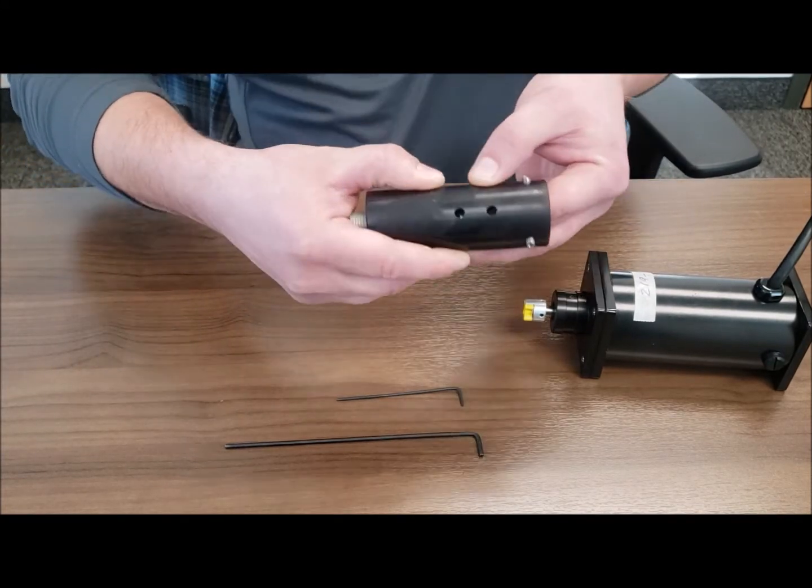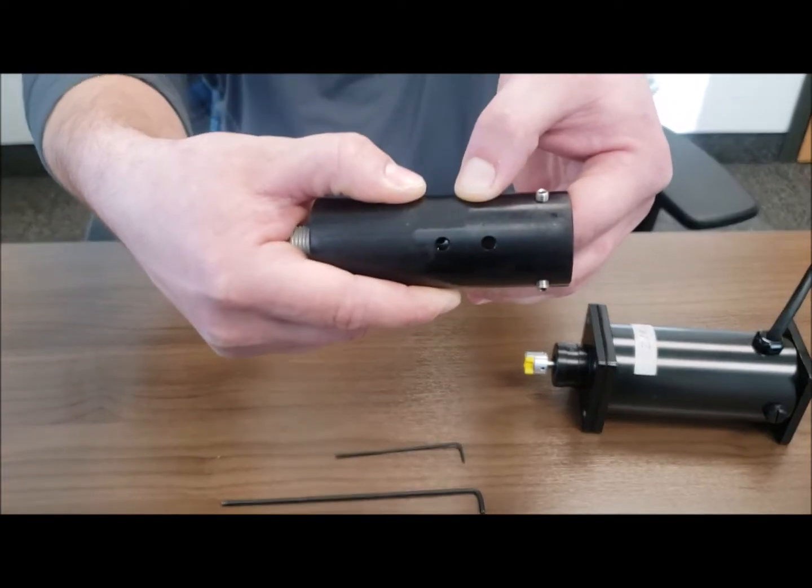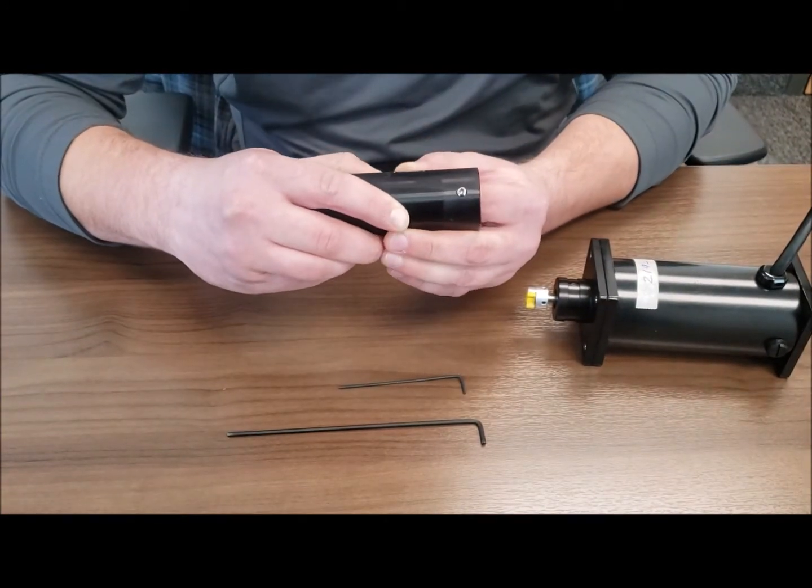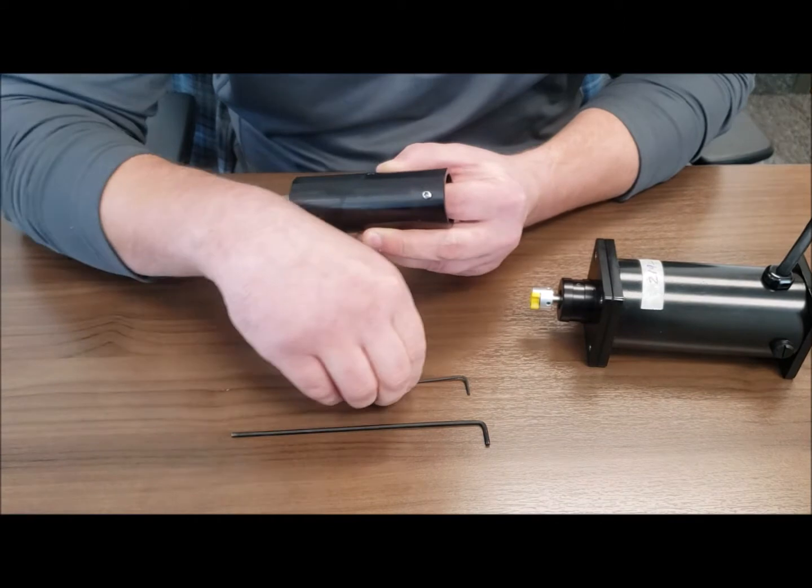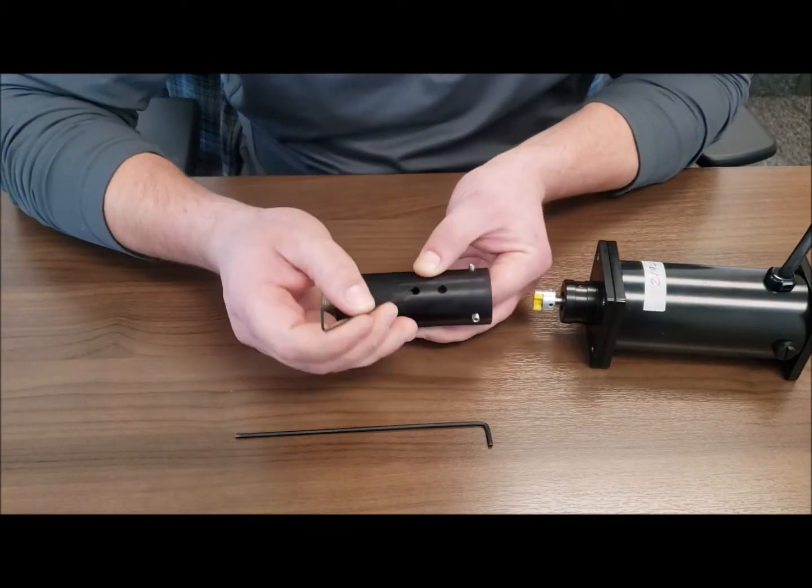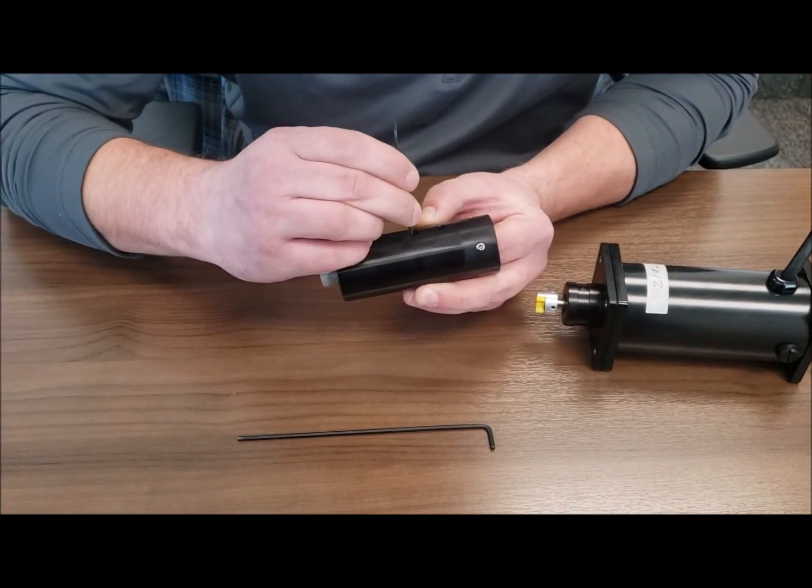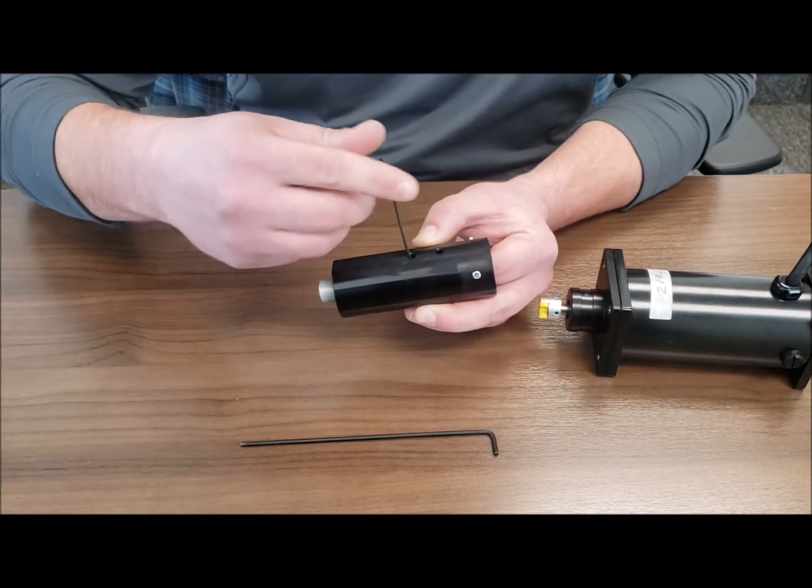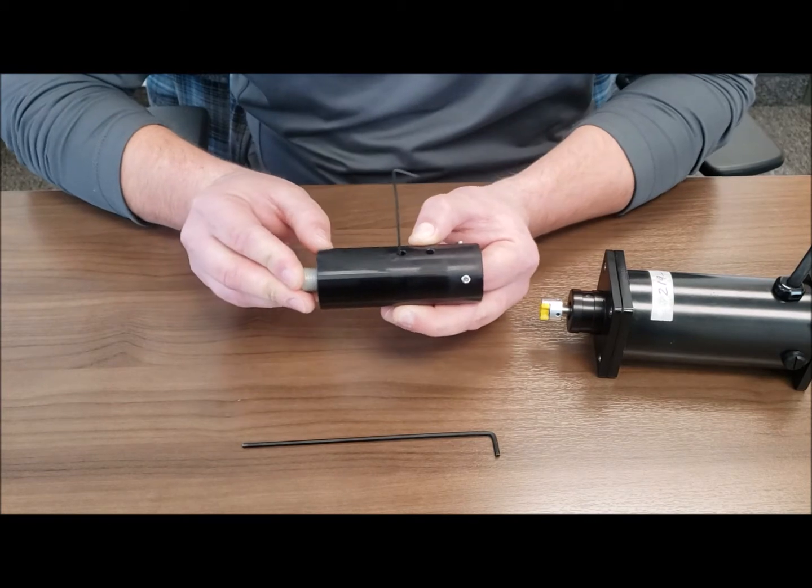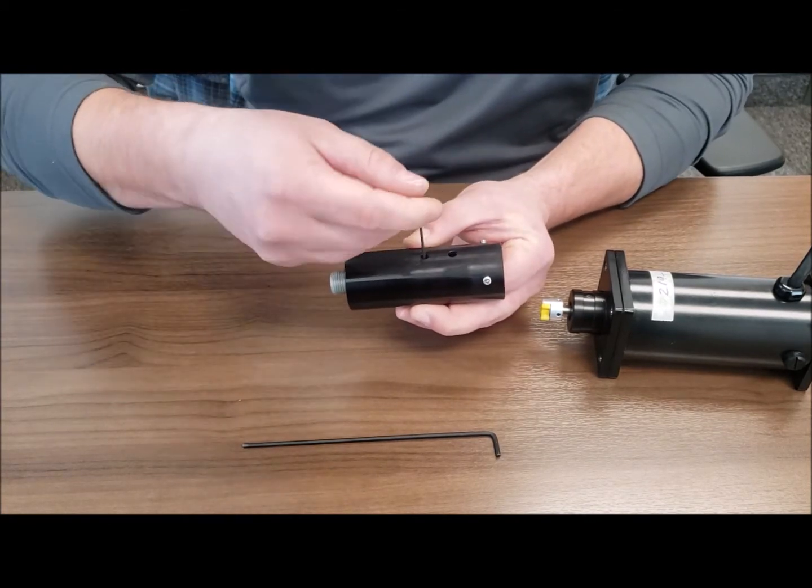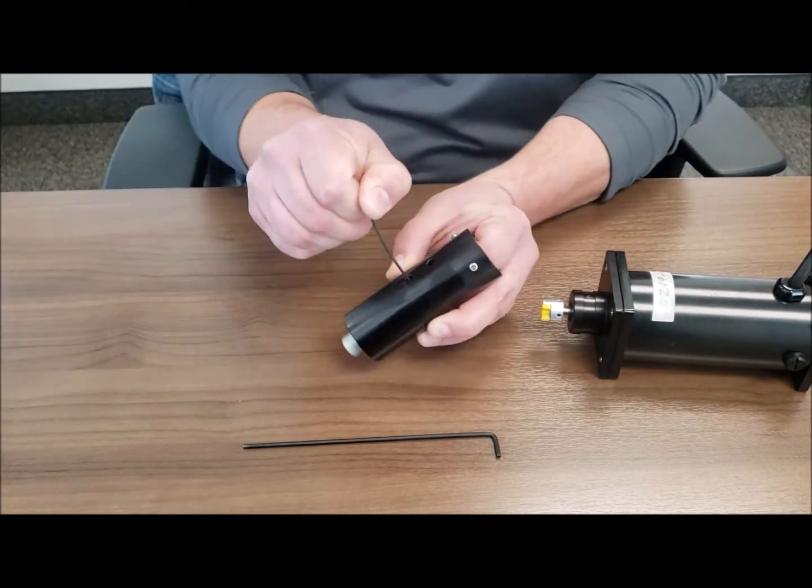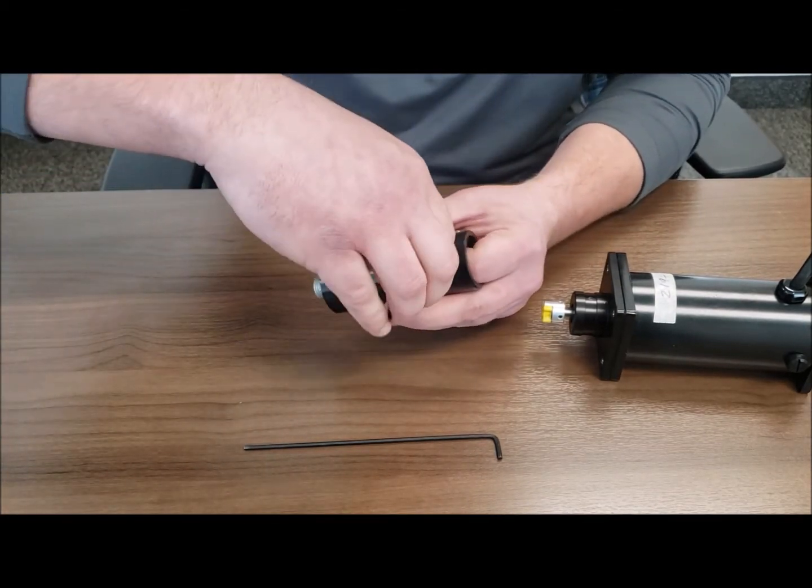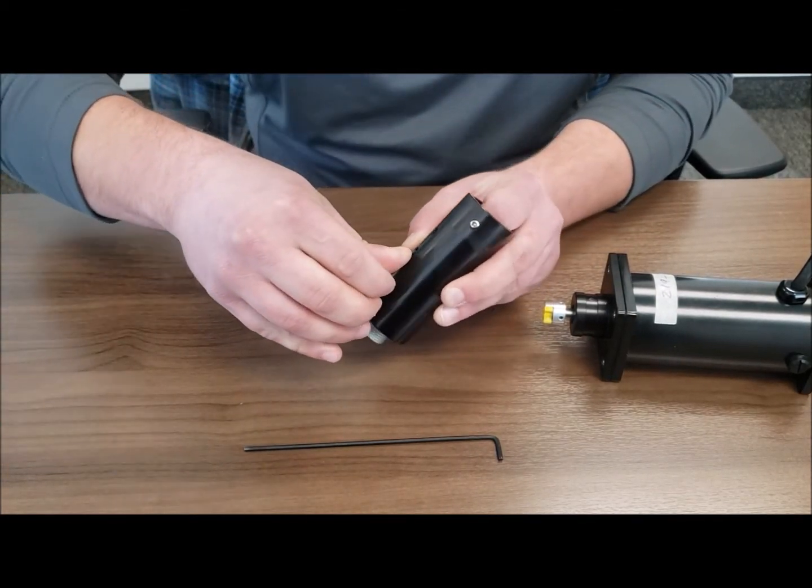You should be able to see the set screw inside the access hole in the side of the chuck shaft. Take the 1.5 millimeter allen wrench, find the set screw while giving pressure on the part down into the chuck shaft making sure it stays flush, and tighten it down.